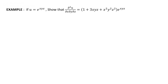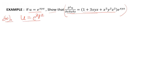Next example: given u = e^(xyz), show that the third-order mixed partial derivative ∂³u/∂x∂y∂z = (1 + 3xyz + x²y²z²)·e^(xyz). First, take the partial derivative with respect to z, treating x and y as constants: ∂u/∂z = xy·e^(xyz). Call this equation one.